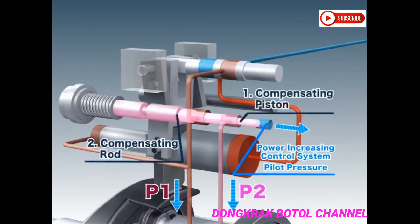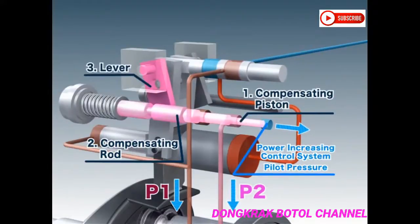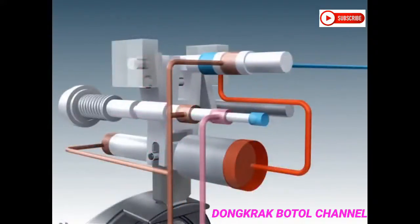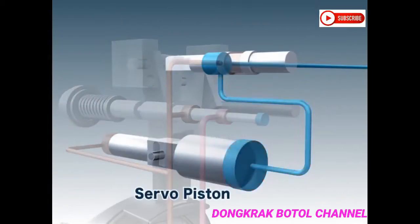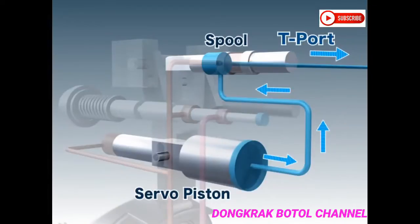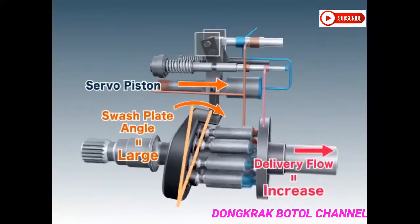The compensation rod and piston are pushed back by their springs. As the compensating rod moves, the lever rotates, moving the feedback lever, which in turn moves the spool. As a result, the pressure within the larger side of the servo piston is released through the tank port, which then moves the servo piston. As the servo piston moves, the inclination of the swash plate increases, increasing the delivery flow.